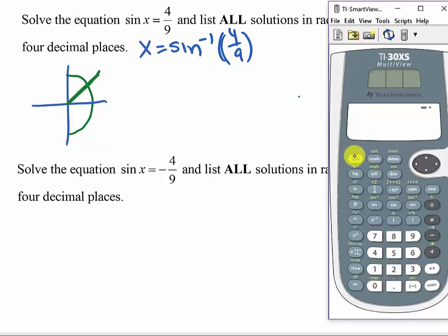So I've got inverse sine of 4 divided by 9, and it looks like that's going to be, to four decimal places, 0.4606. So one of my solutions is 0.4606.